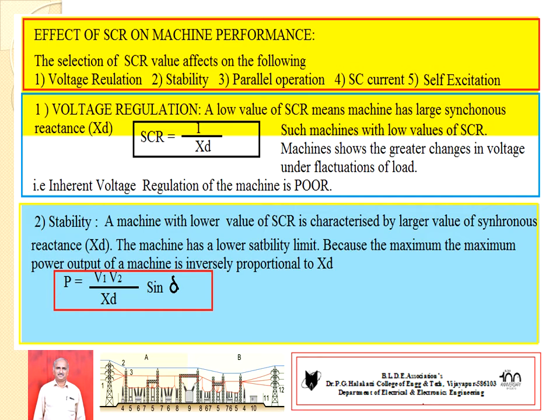Number two: Stability. In a power system, the power transfer between any two points is given by: P = (V1 × V2 / XD) × sin(δ), where V1 and V2 are voltages between the two points and XD is the direct axis reactance. Maximum power transfer gives good stability. However, at a lower value of SCR, a higher value of synchronous reactance is developed, so the machine possesses a lower stability limit. Since maximum power output is inversely proportional to XD, a low SCR leads to low stability.